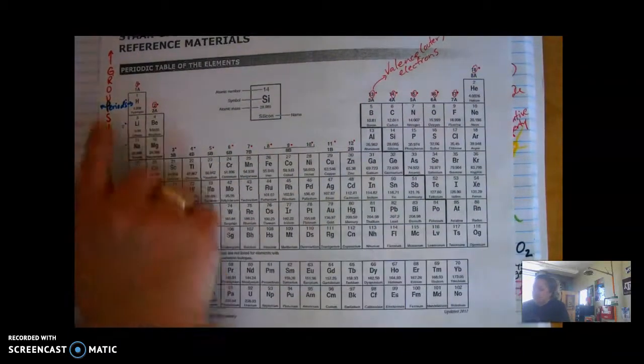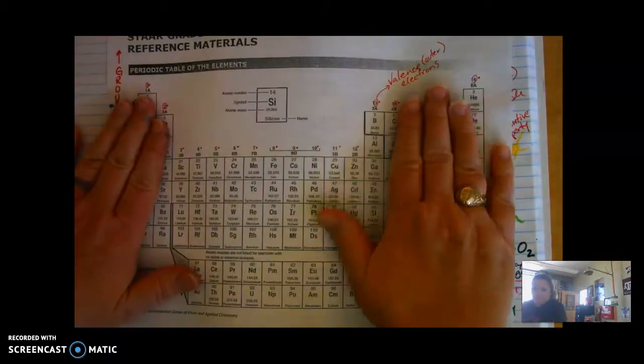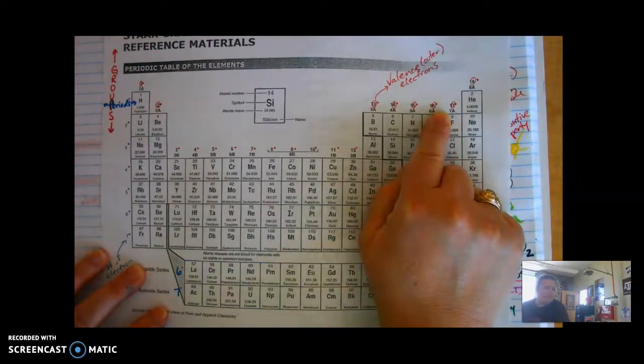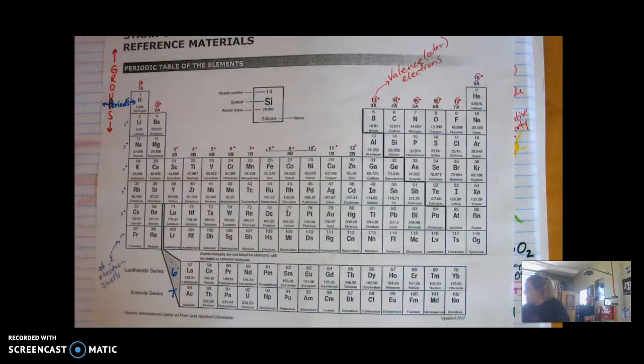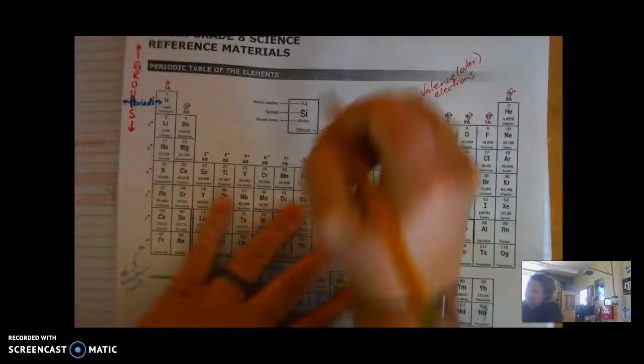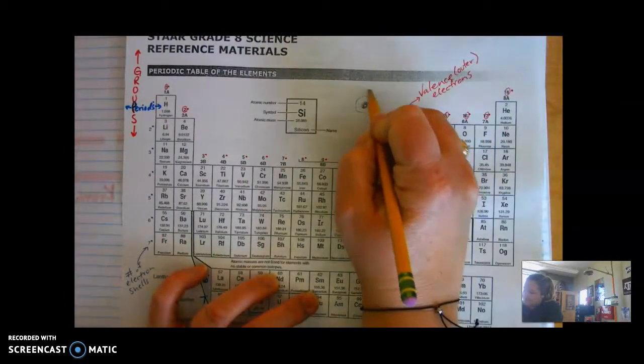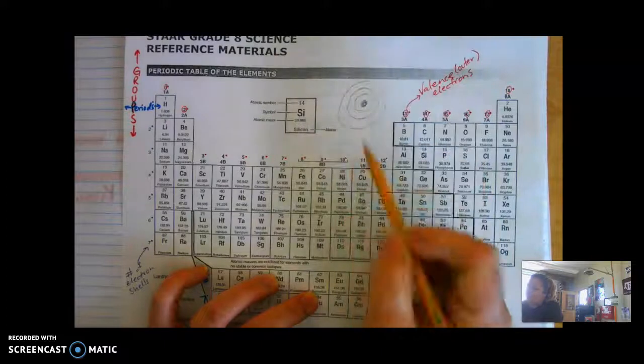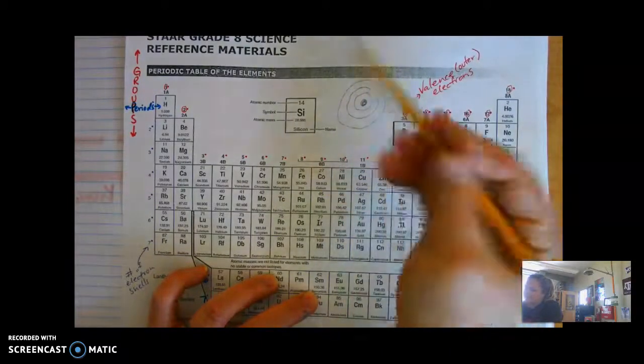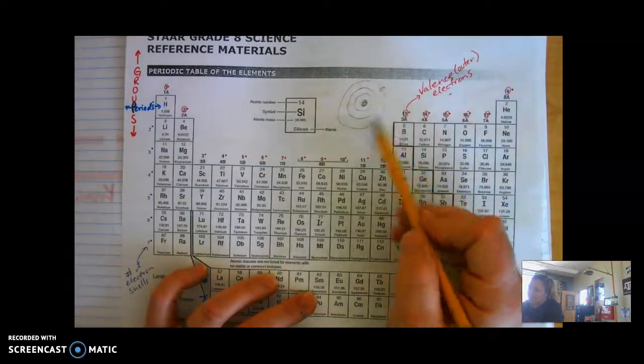These groups and periods mean things. Stuff you'll go more into in eighth grade. These numbers across the top, don't worry about the ones in the middle, just the left and right side. See how we circled the ones place? These are going to tell us the number of valence electrons. Valence electrons means the electrons on the outside. You've seen atoms with these circles around them. These outermost ones, however many shells it's got, the electrons on the outside are valence electrons because they're going to be the ones bumping into other atoms and either reacting or not reacting.